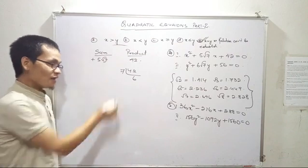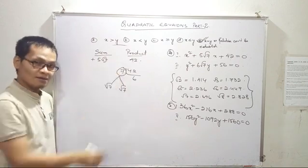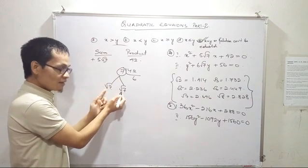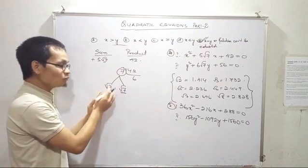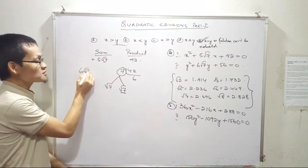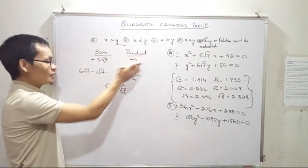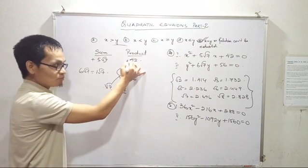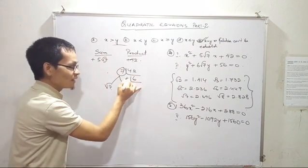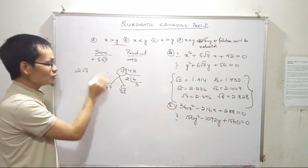Seven times 6 equals 42. So we work with root 7 factors: 7 root 7 times root 7 gives 7. One root 7 is used. Six root 7 minus one root 7 equals five root 7. For the product, plus into minus is minus. For the factor of 56: 6 factors as 2 times 3. So we get 2 root 7 and 3 root 7.